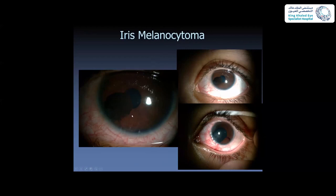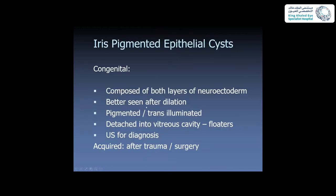Melanocytoma is another form, usually darkly pigmented and less aggressive than melanoma. A case was diagnosed by aspirating through the cornea, then confirmed with sector iridectomy — excising the tumor and dissecting it from the cornea — with no recurrences.